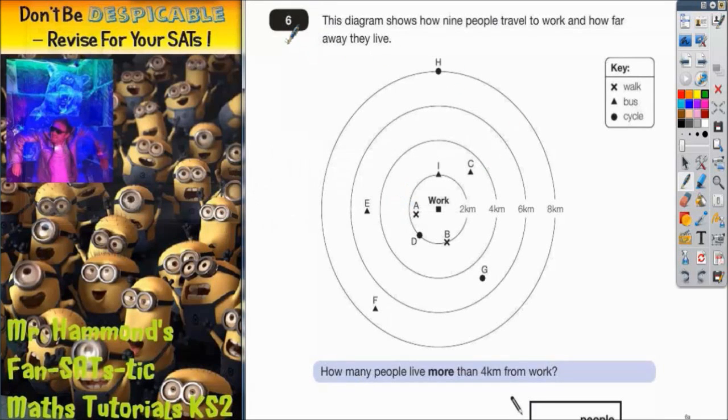OK, here we go. Question 6 says this diagram shows how 9 people travel to work and how far away they live. We should always have a quick look at the key. So on this diagram, any crosses mean that people walk to work, triangles mean that they take a bus to work, and a circle means that person cycles to work.